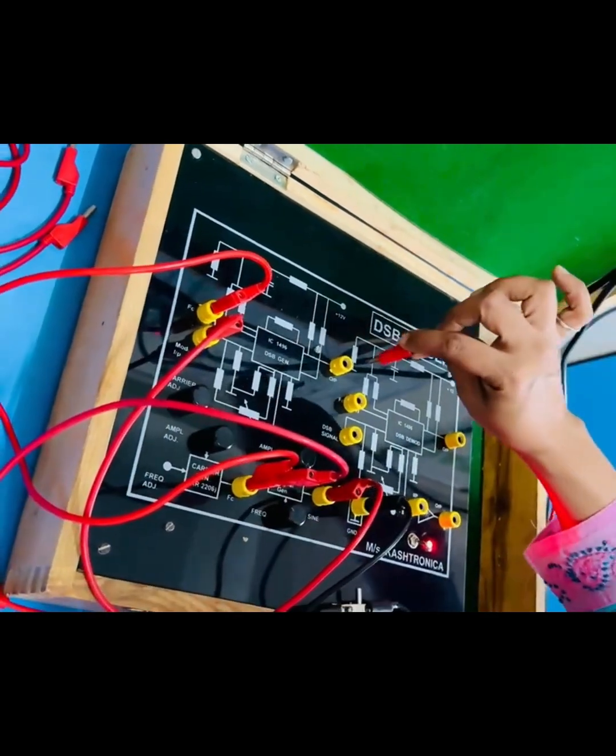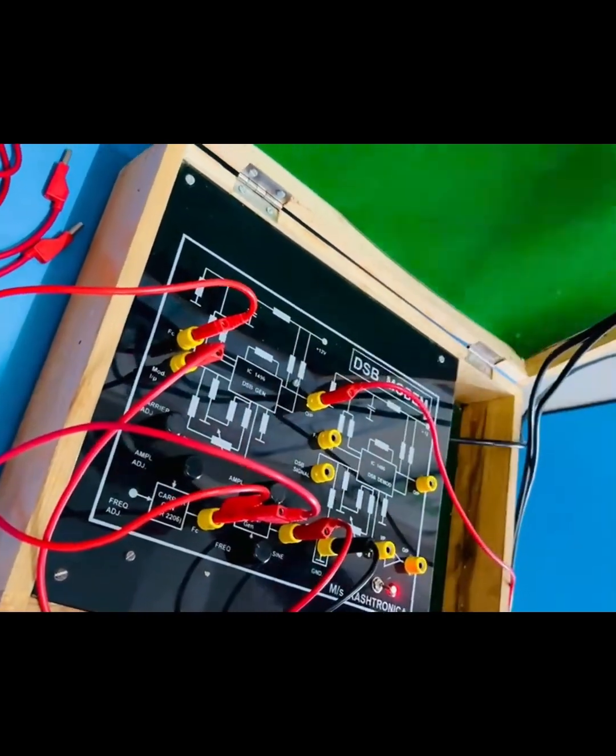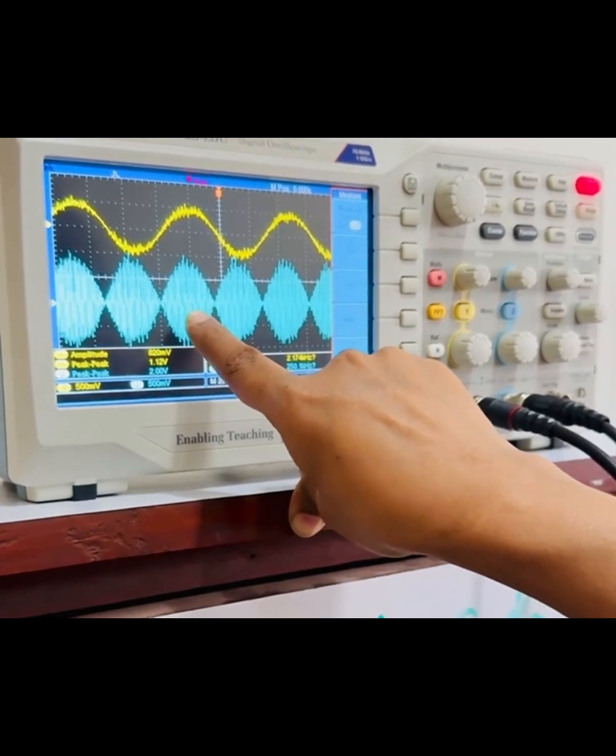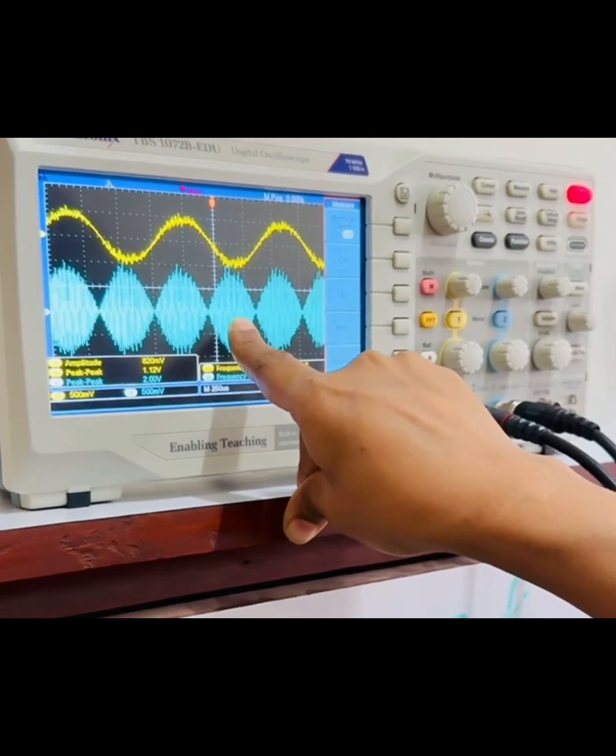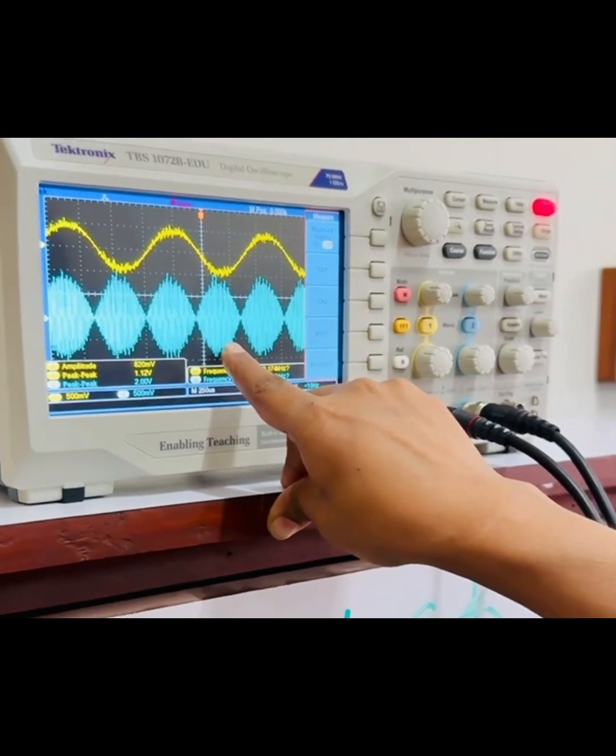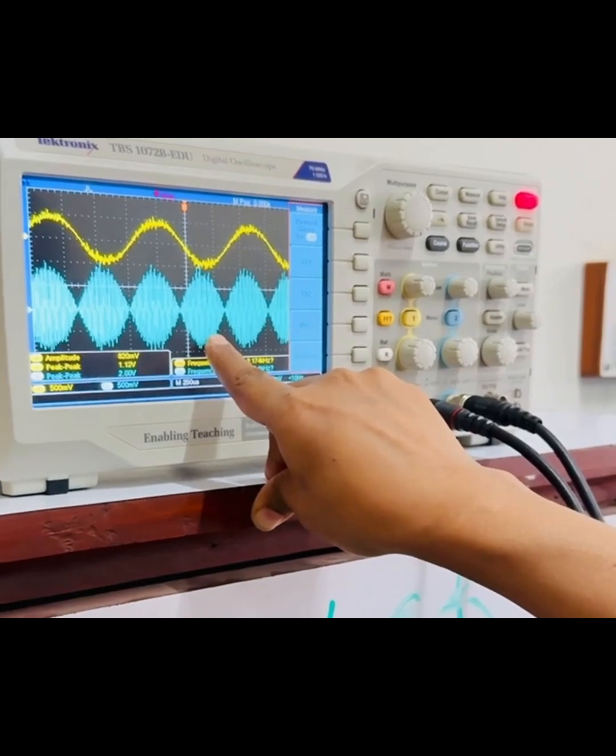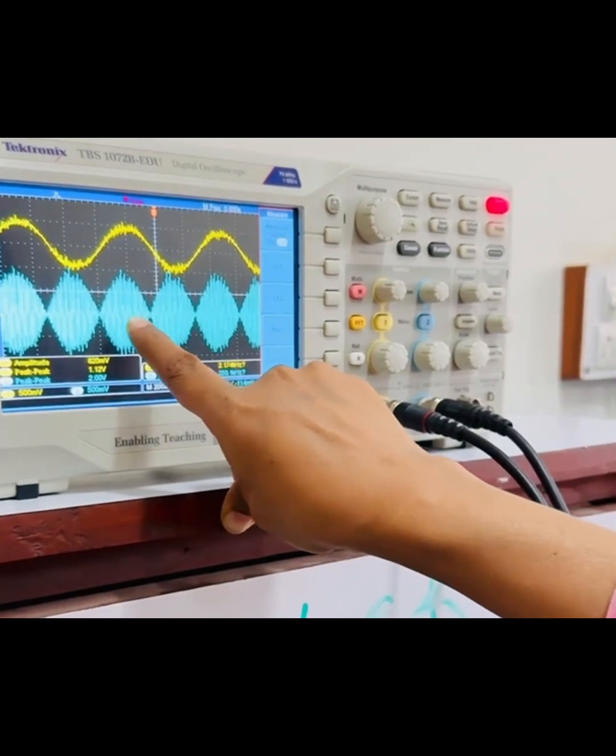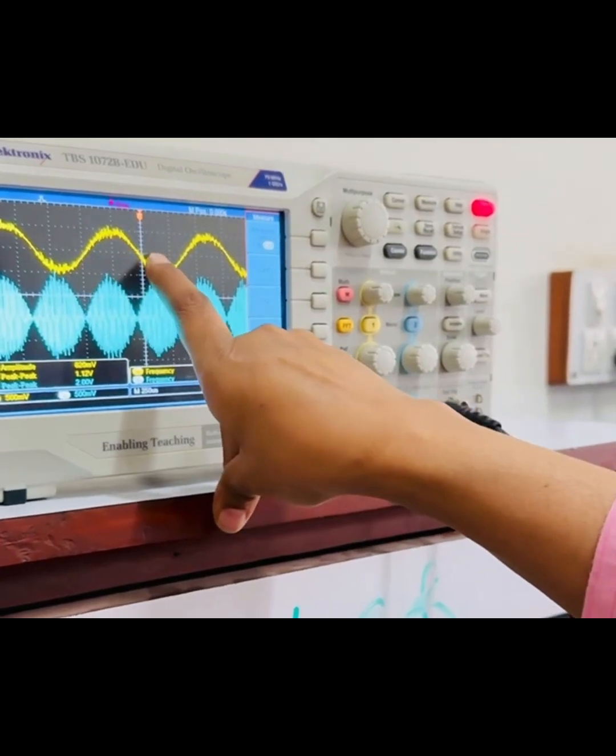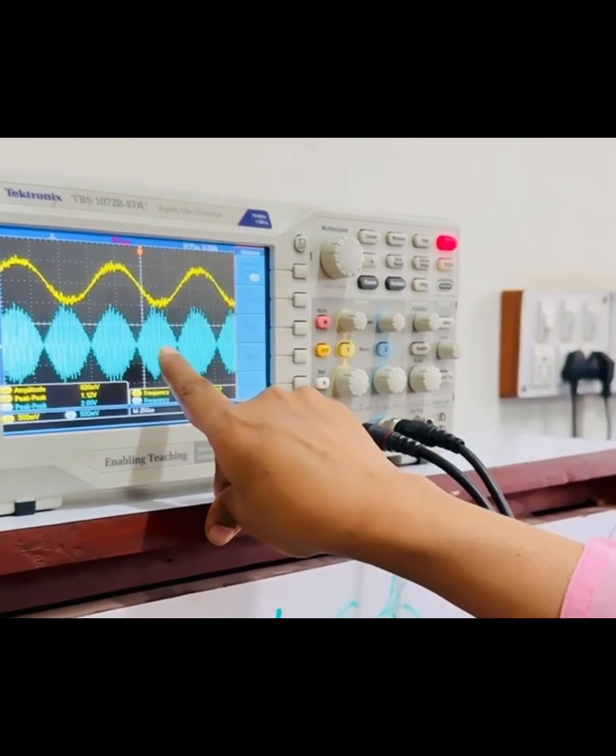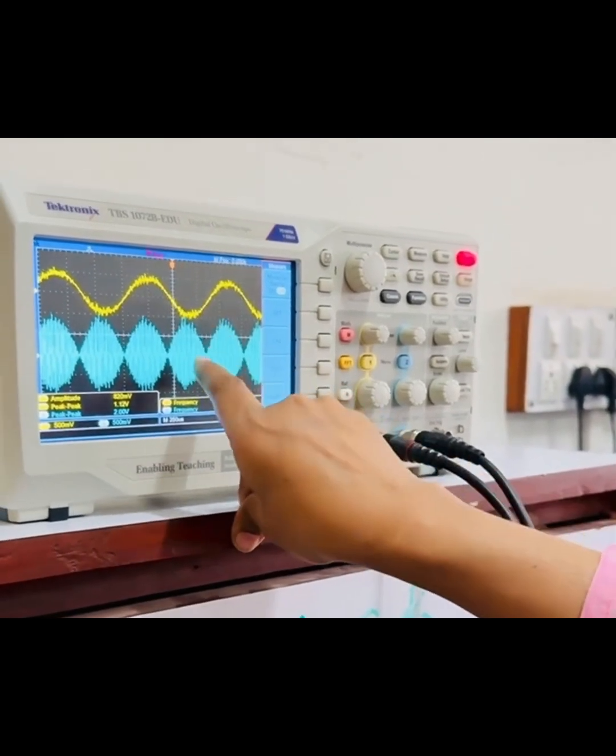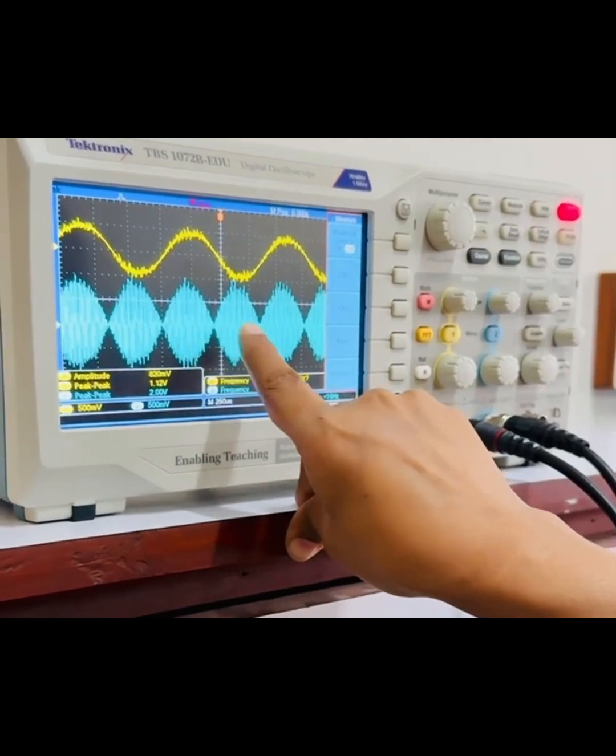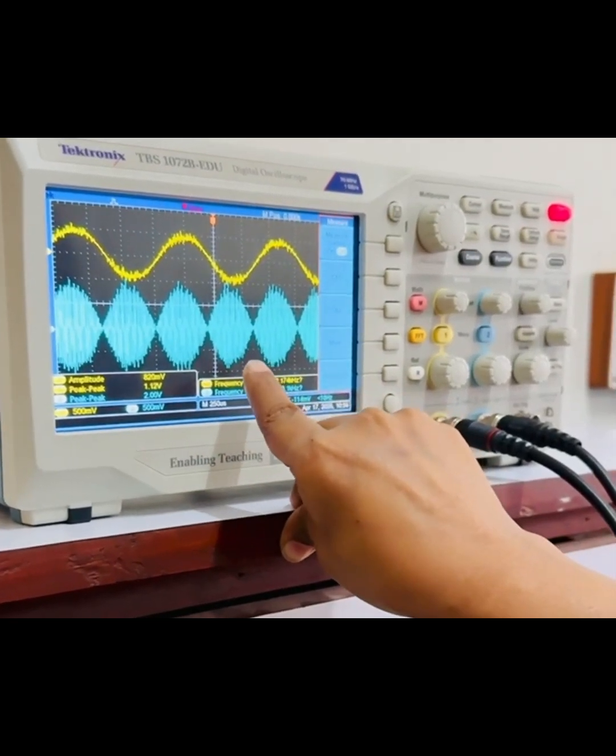Now I am connecting the probe to the output of DSB generator circuit. The modulated signal carrier is in phase with the original carrier during the positive half cycle, while during the negative half cycle the carrier in the modulated signal is 180 degrees out of phase of the original carrier. This is how the power in the carrier during the positive half cycle and the power during the negative half cycle, which is 180 degrees out of phase, will cancel each other and the carrier gets suppressed.